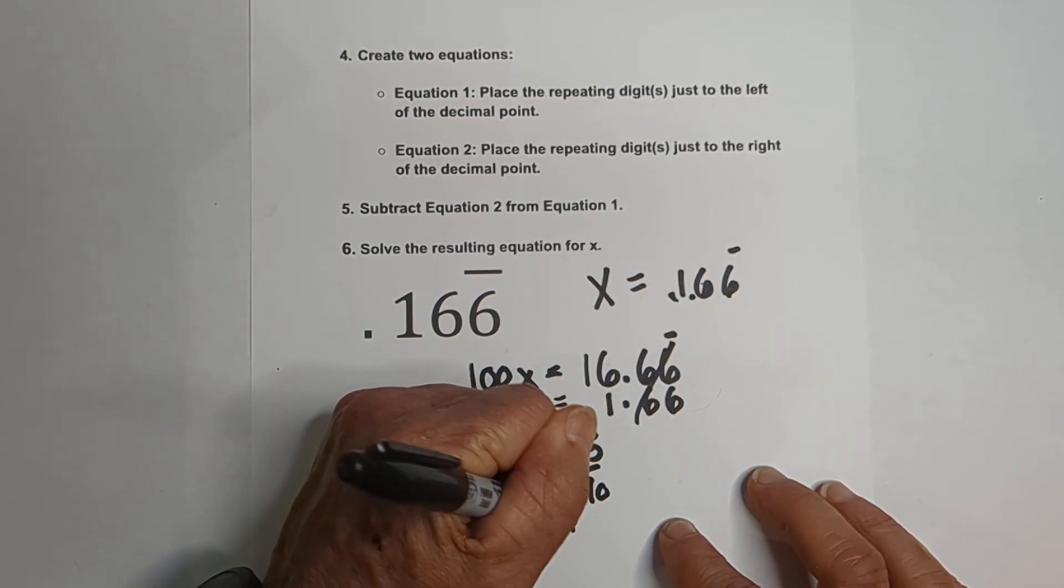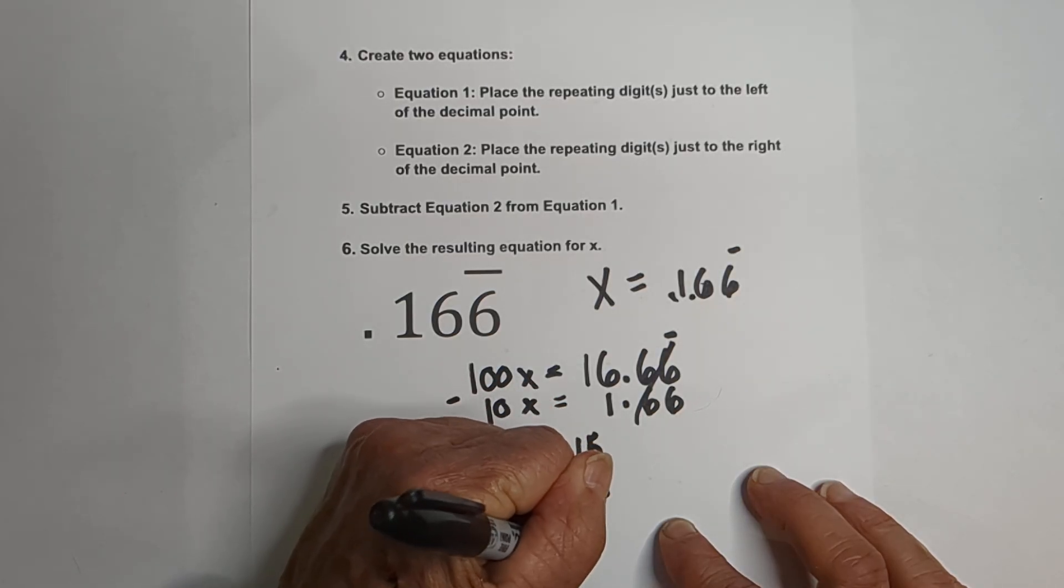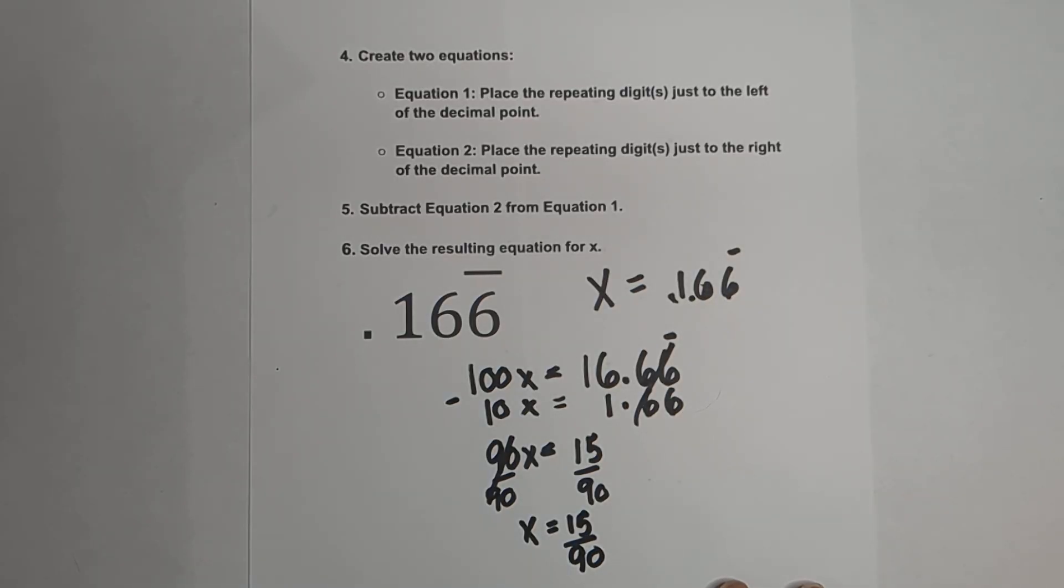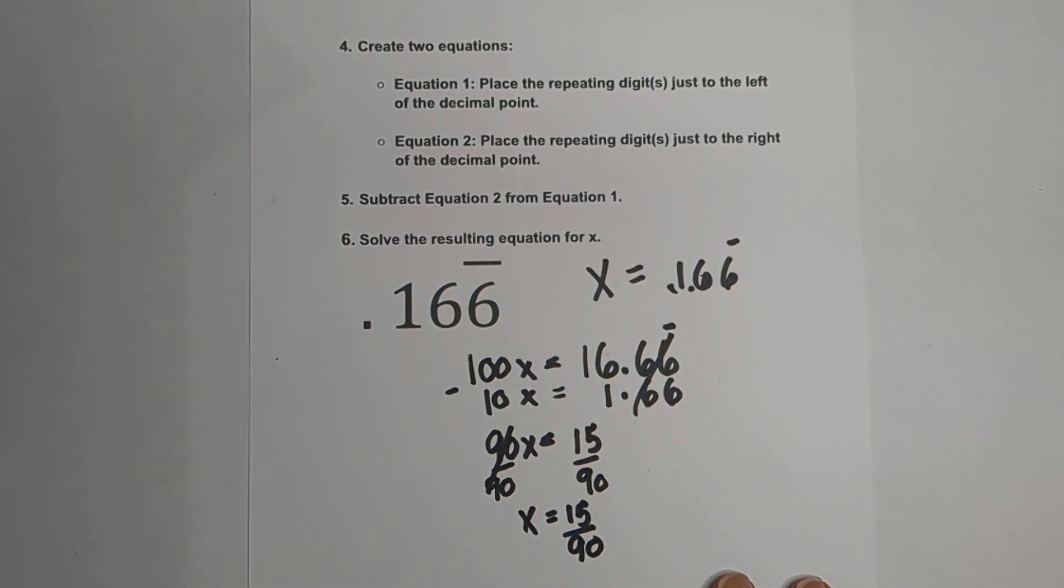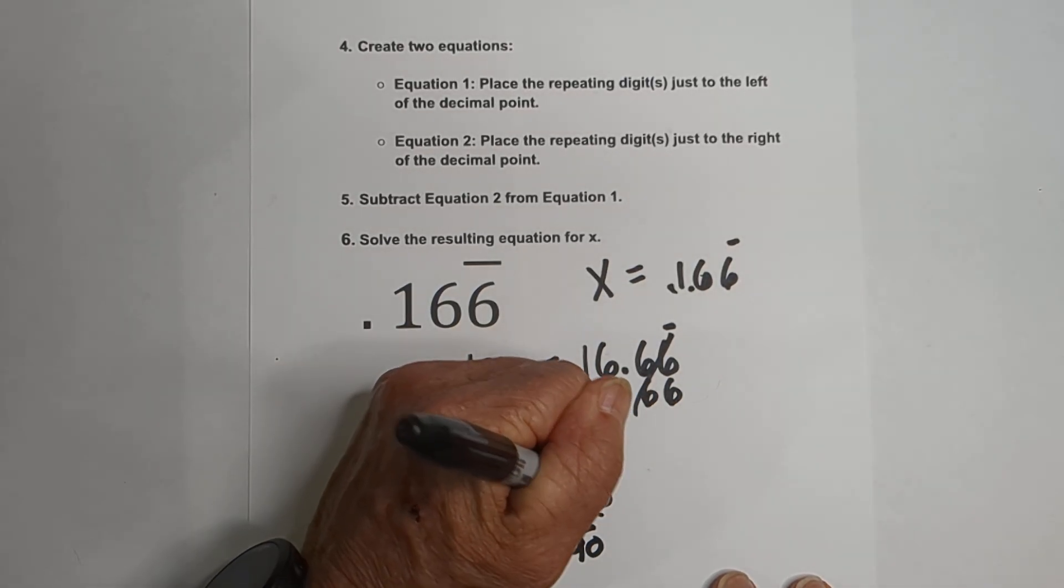x equals 15 over 90. Now can we simplify this fraction? Yes, because they're both divisible by 15.